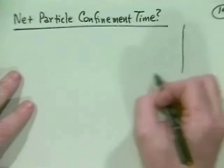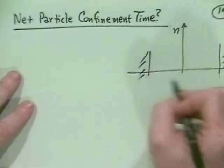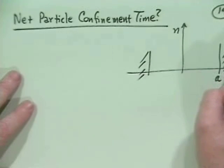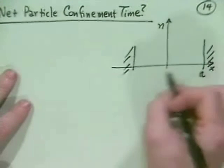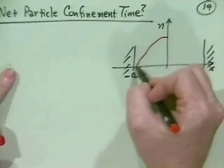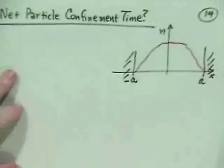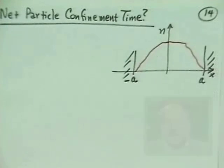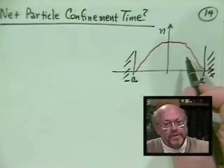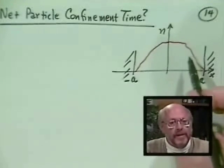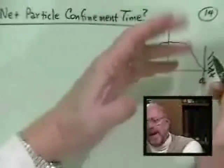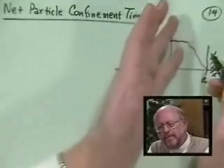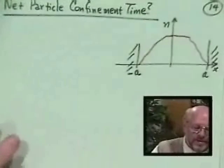We call this the net particle confinement time. I have in mind a slab of plasma with some density profile, walls at x equals plus and minus a, and a spatial coordinate x. I want to know: given this initial density profile and the law of diffusion, how long will it take to decay due to the particle flux from the inhomogeneity?